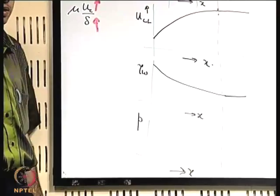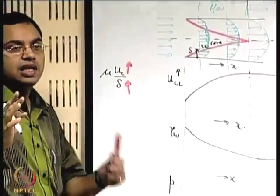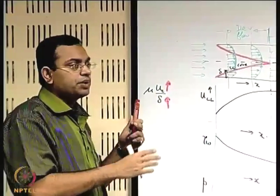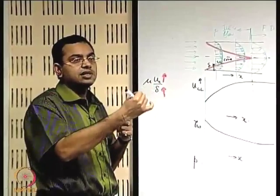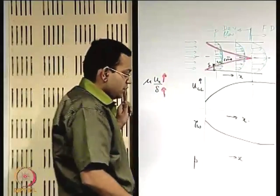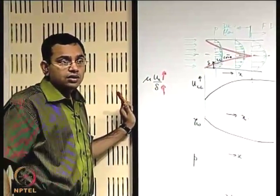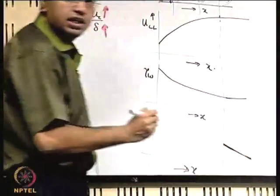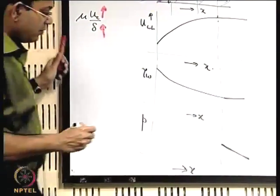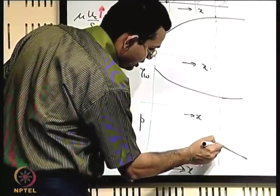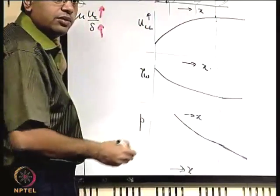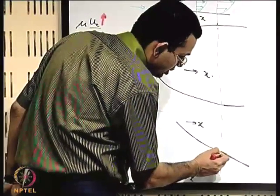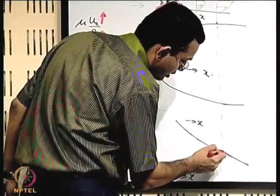The wall shear stress and pressure gradient are related because the pressure gradient overcomes the resistance effect of the wall shear stress. So the pressure variation in the developing region must match the gradient of the fully developed straight line at the transition point — the tangent to the developing region curve must equal the slope of the fully developed straight line. This is the qualitative variation, which gives physical insight into how these quantities behave.